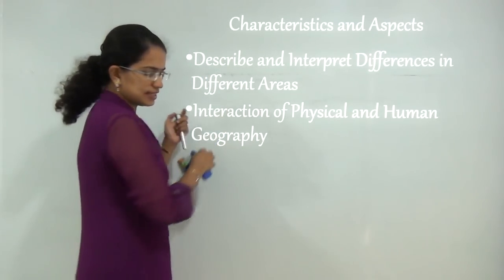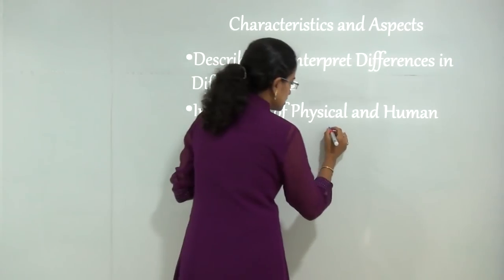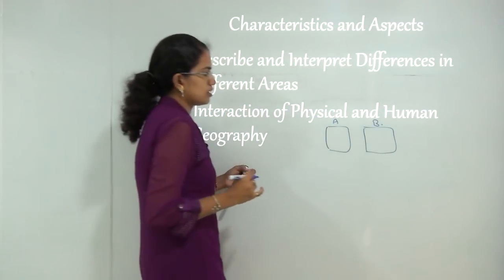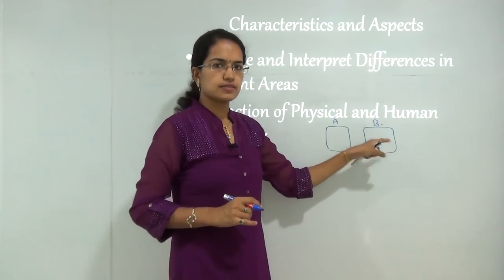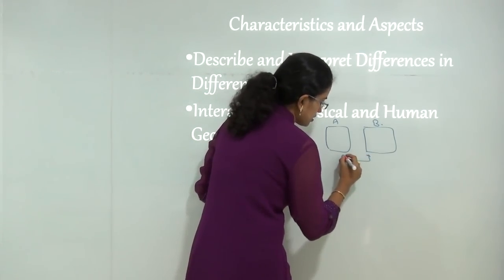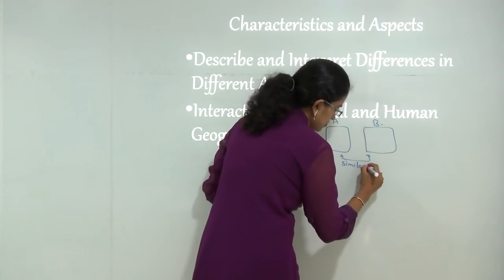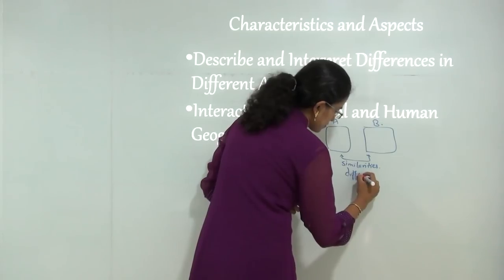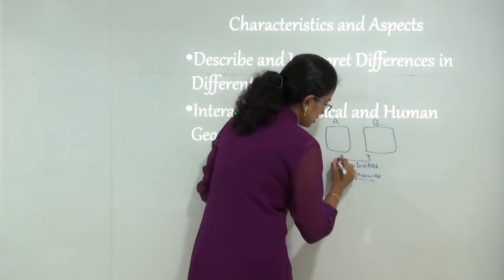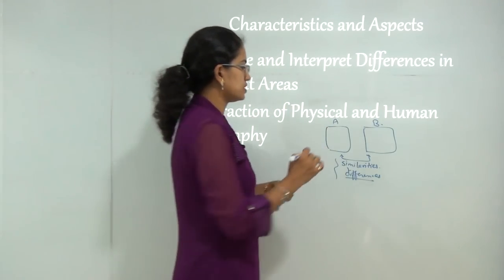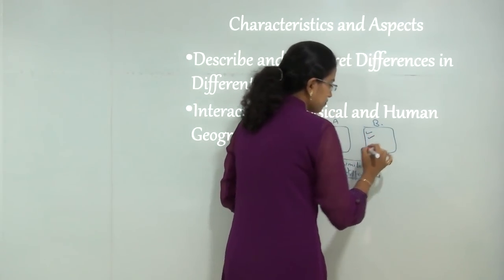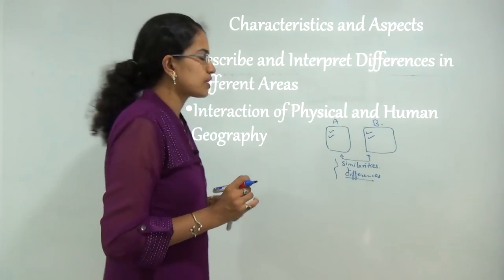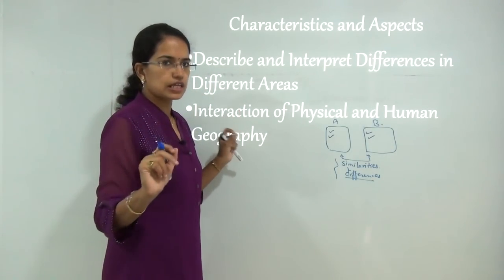There is supposedly a region A and another region B. We have to find out what are the similarities between the regions and what are the dissimilarities or differences between them. What Hartshorne did was to find out the differences that made one area unique from another area, or one region unique in contrast to another region. This was the basis of the theory of aerial differentiation.